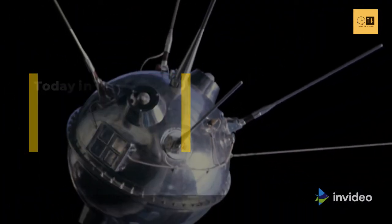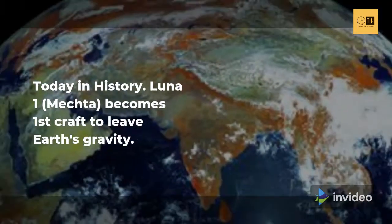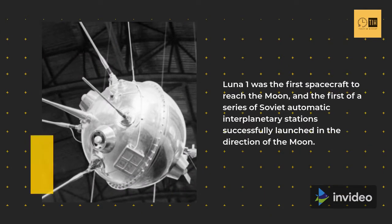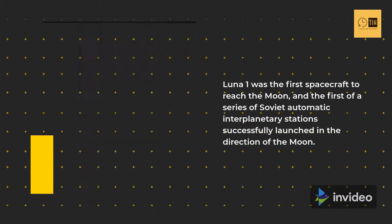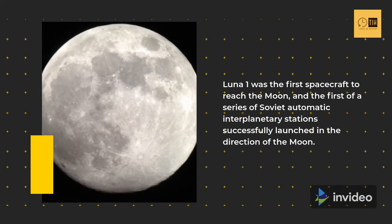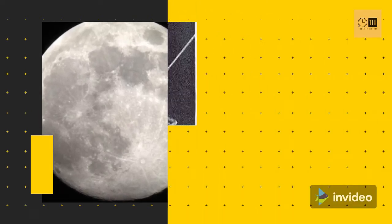Today in history: Luna 1 becomes the first craft to leave Earth's gravity. Luna 1 was the first spacecraft to reach the Moon, and the first of a series of Soviet automatic interplanetary stations successfully launched in the direction of the Moon.